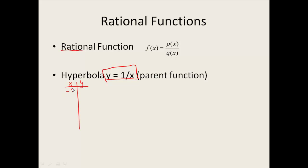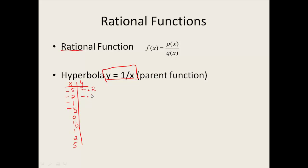I'm going to go ahead and pick the points negative 5, negative 2, negative 1, negative one-half, 0, one-half, 1, 2, and 5. I picked quite a few points because I'm not really sure what my graph is going to look like, so I want to make sure I have a lot of data points. When I find the values, I plug each one in — so 1 divided by negative 5 is negative 0.2, and 1 divided by negative 2 is negative 0.5, and continue doing each one of those.